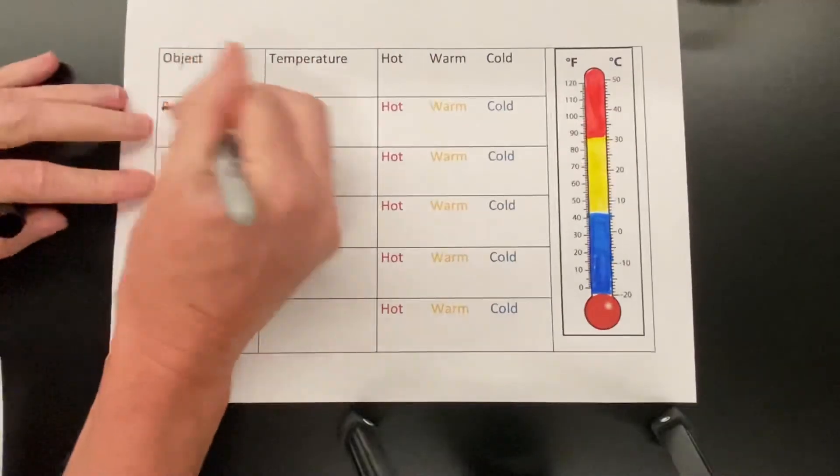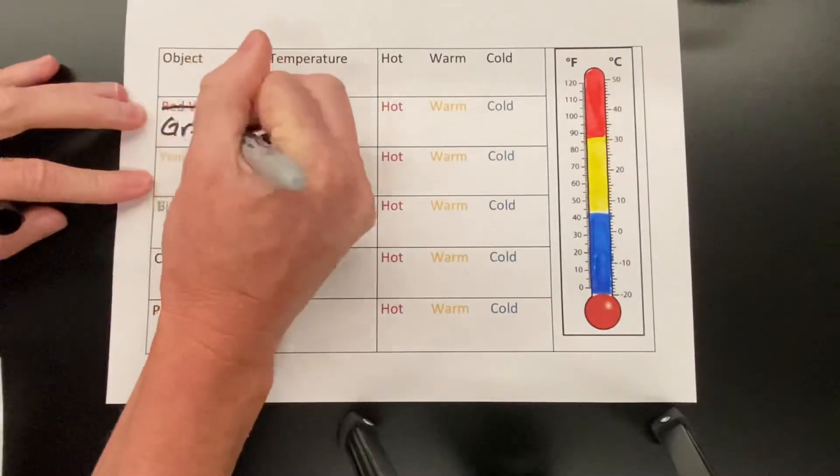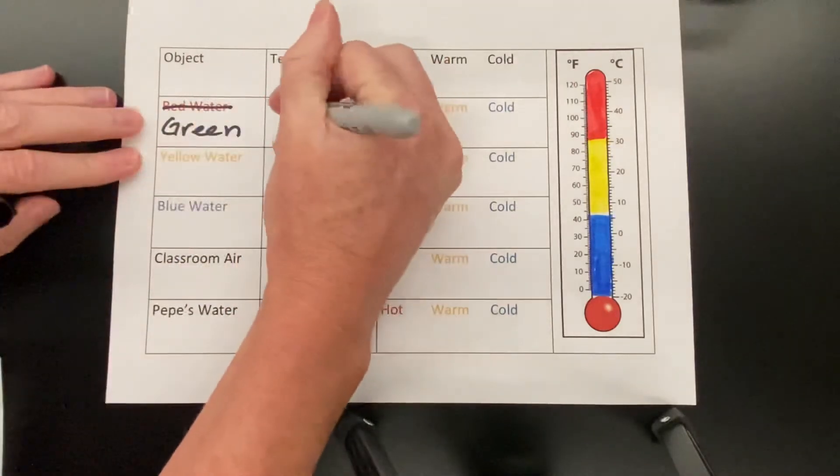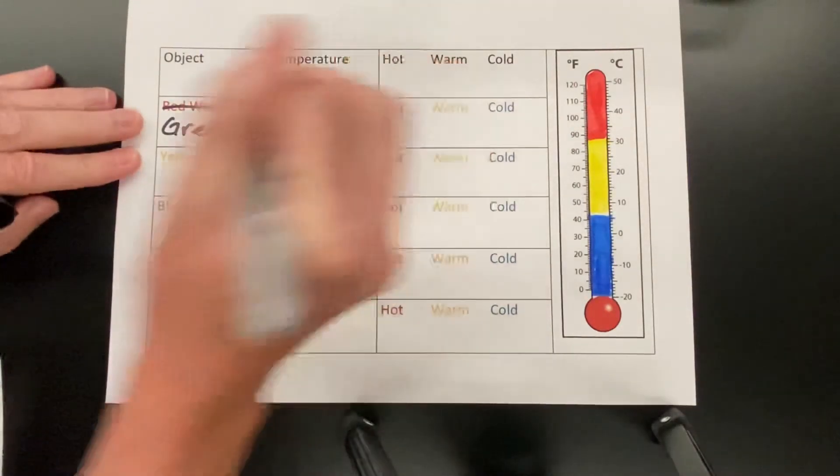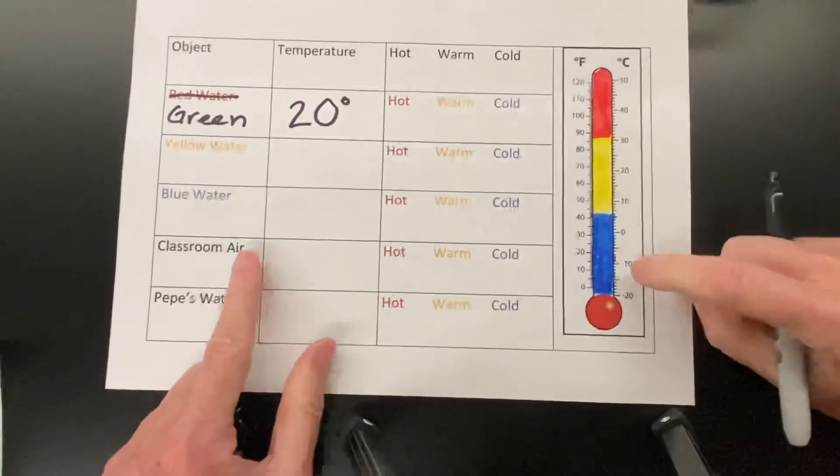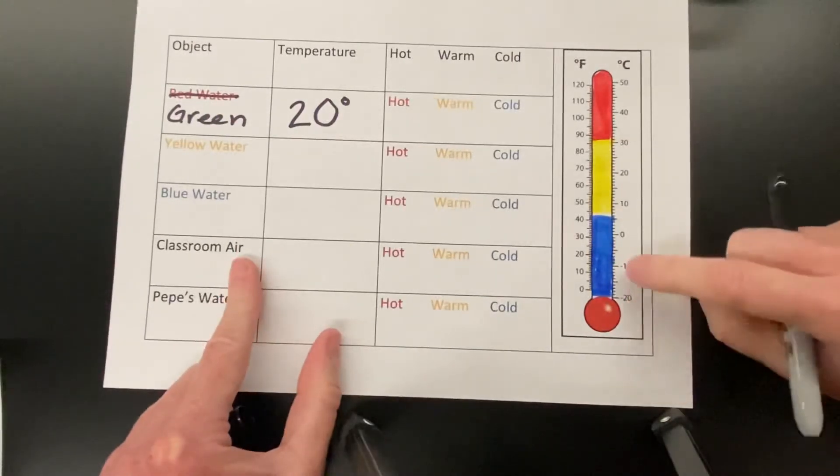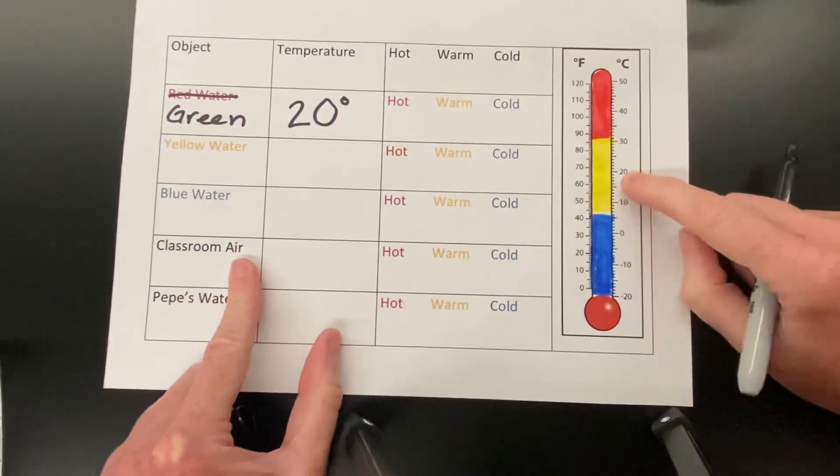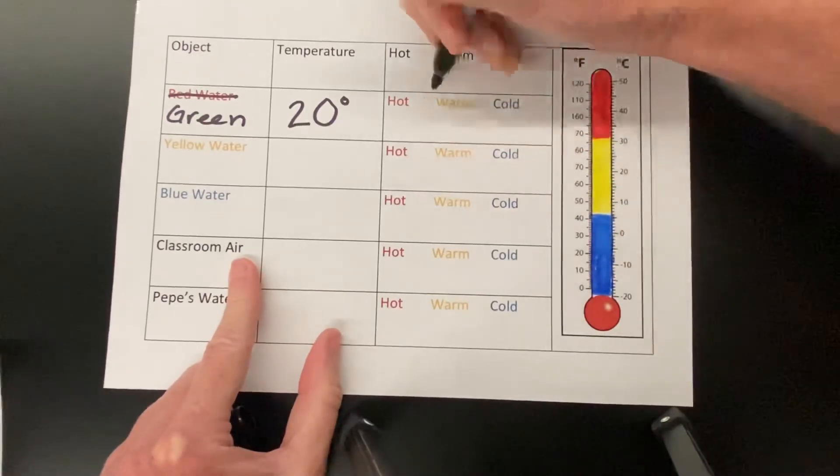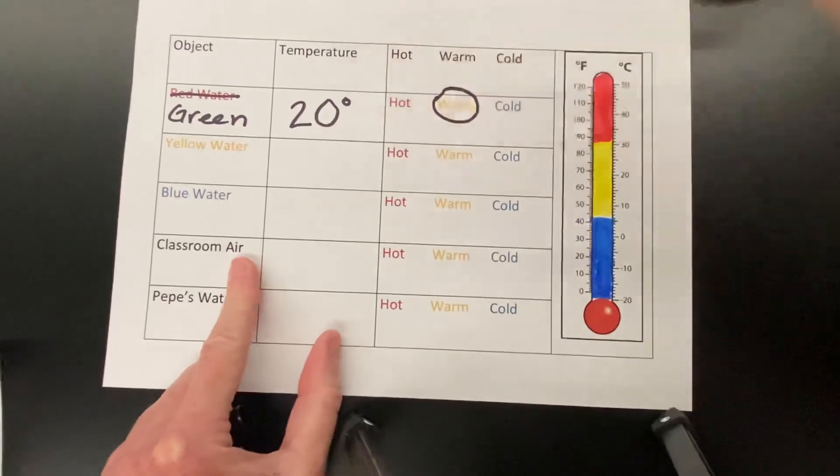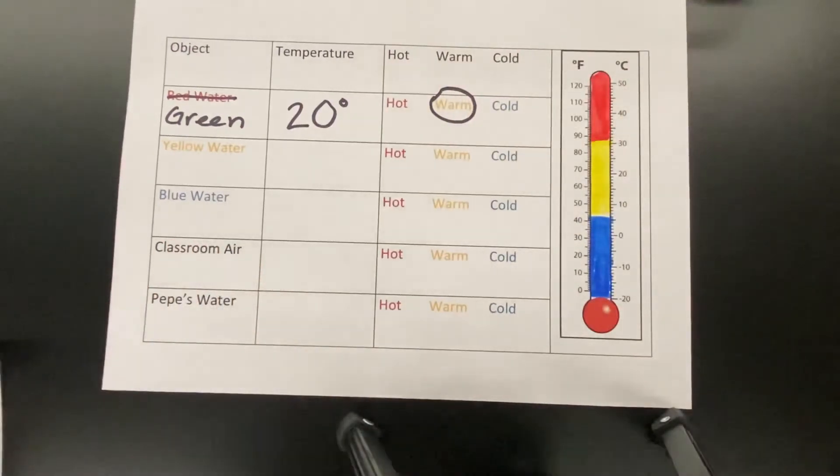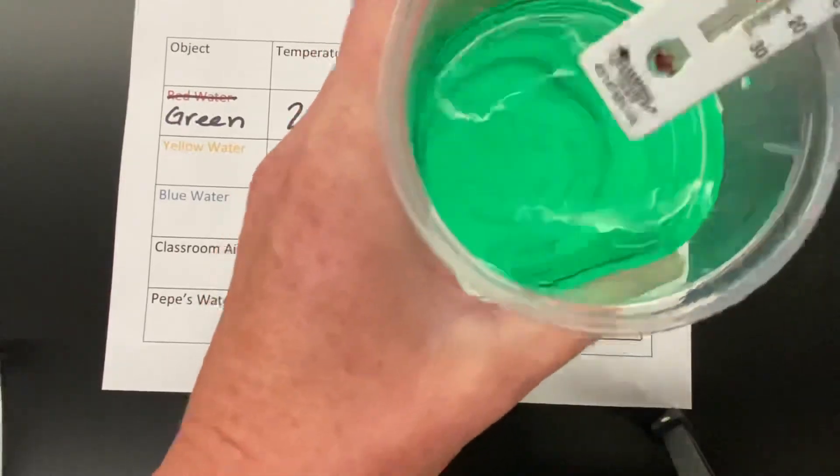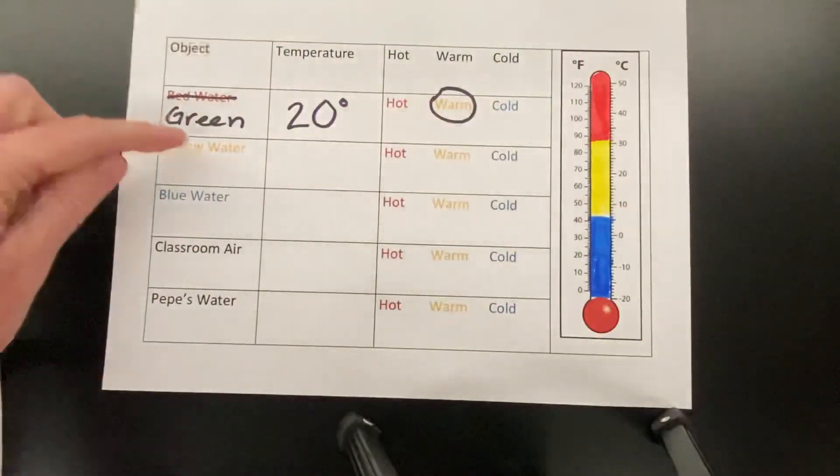Now let's pretend that this red water was really green water, just for my purposes, but you'll actually be measuring red water. And we know that it's twenty degrees Celsius. So I look over here in the zone. This is below zero, so we're not using those ones, but above zero, twenty is in the warm zone, so then I would circle warm right here. Then I would take my thermometer out of the water and I would go test the other colors of water.